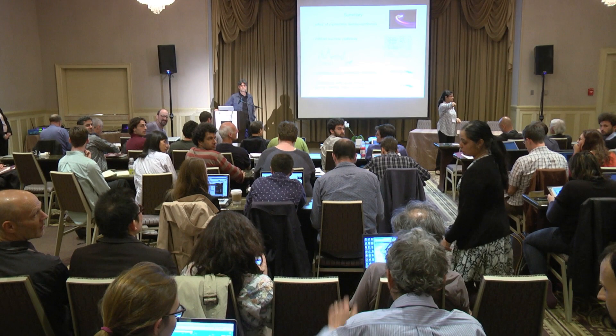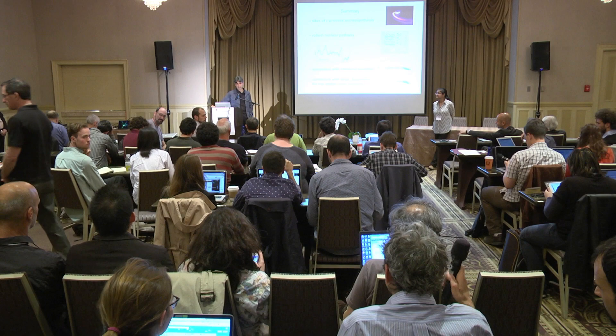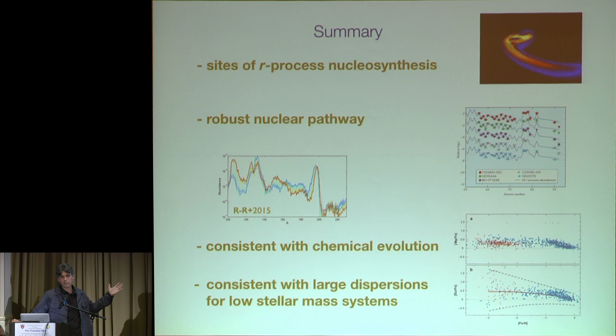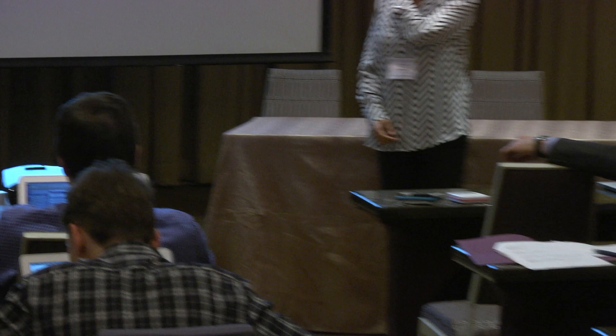Questioner: You demonstrated the robustness of the distribution of R-process elements. Is it possible to set bounds on any change in the fundamental constants from this? Speaker: From this data, probably the bounds are very poor. You really have to look at fine structure changes, which give more detailed bounds. The uncertainty here is large enough that I don't think you can have meaningful constraints — you have to look to fine structure variations with quasars, as John Bahcall did long ago with much improved precision. You cannot put any cosmological constraints from this data; the closed shells aren't moving around in a billion years.